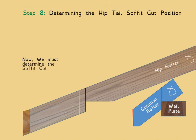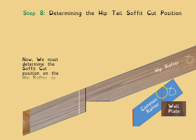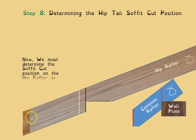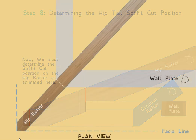The next step is determining the hip tail soffit cut position, which causes frequent confusion. You have the fascia cut length on the common rafter and you need to know where it applies on the hip. The animation shows it transferring directly across. The upstand transfers across at the same level, and the fascia line is applied at the shoulder line — the line you run the skill saw on — not at the white point line. That distance determines the soffit cut on the hip.